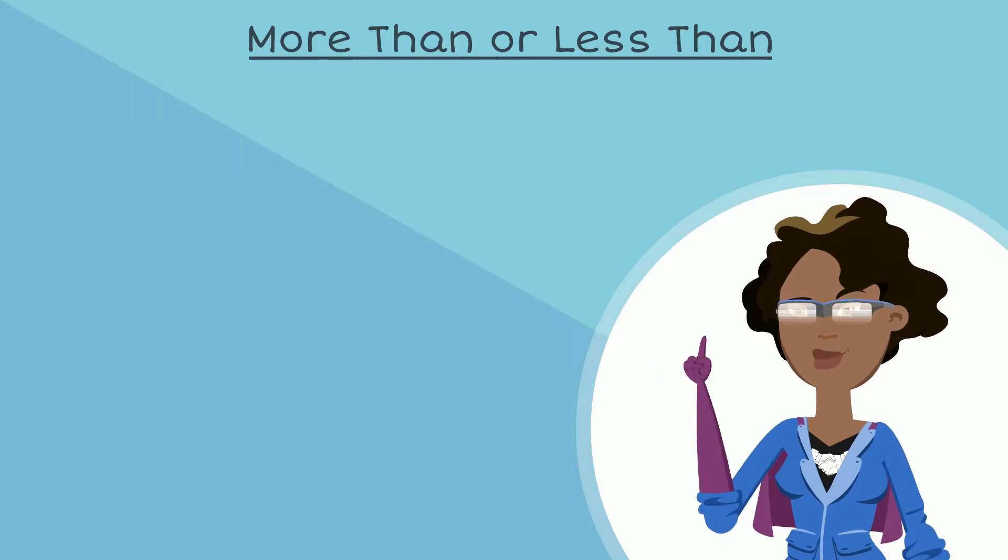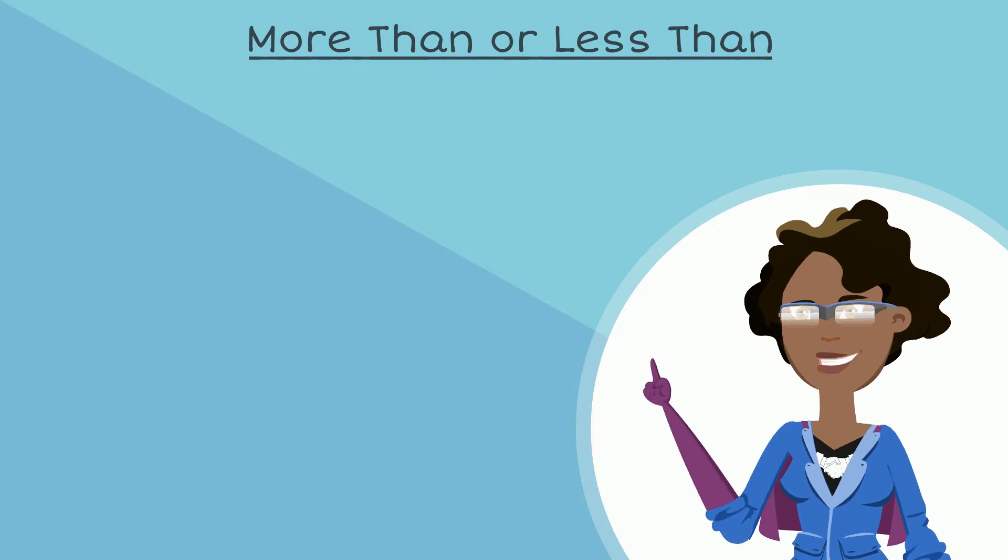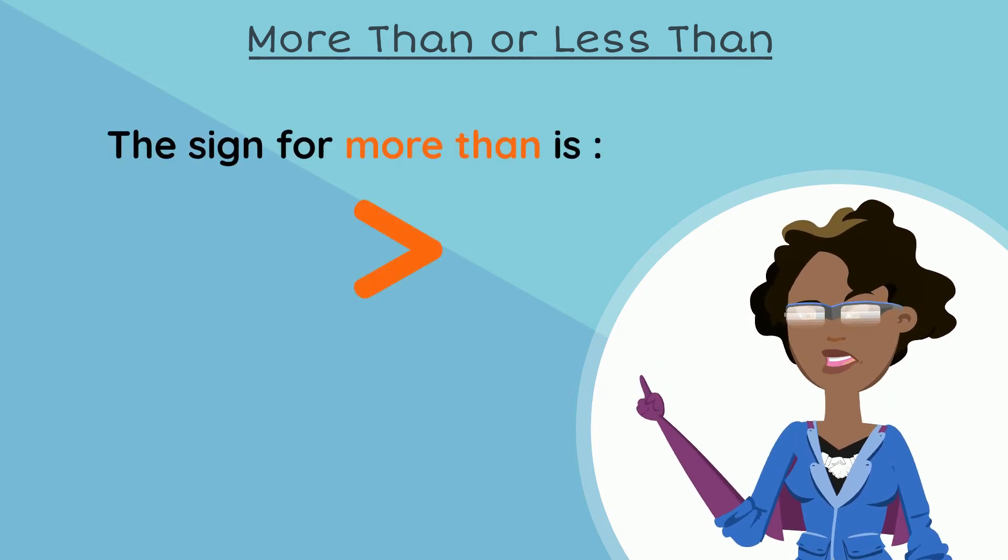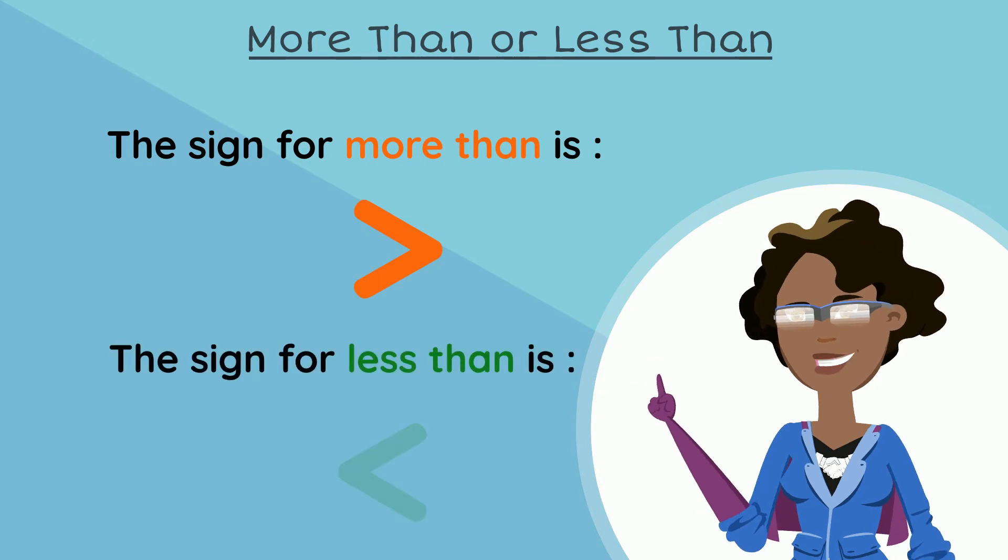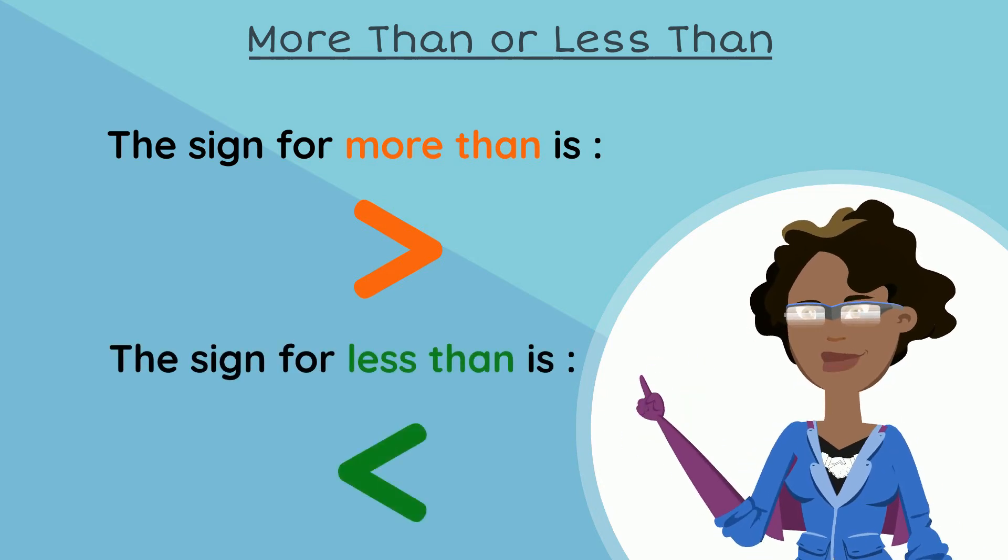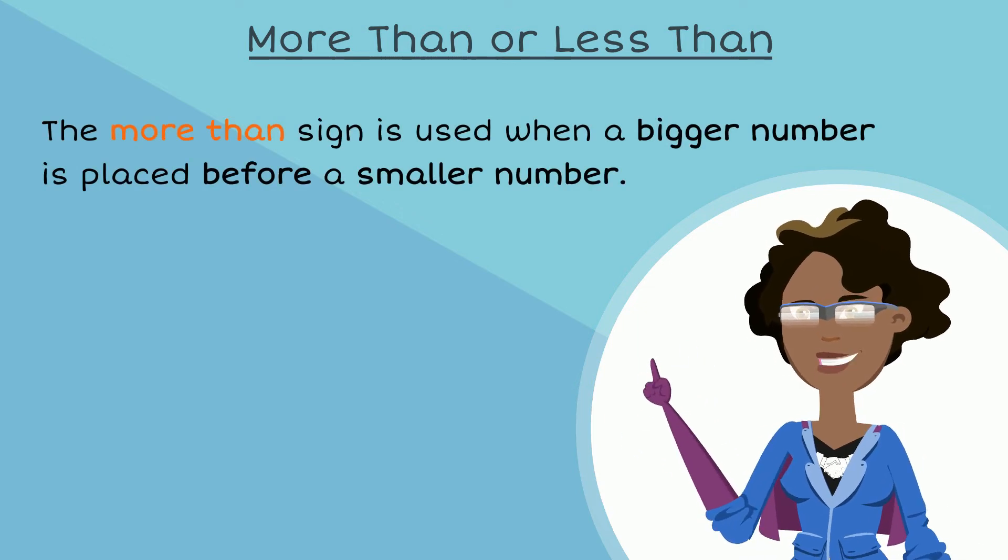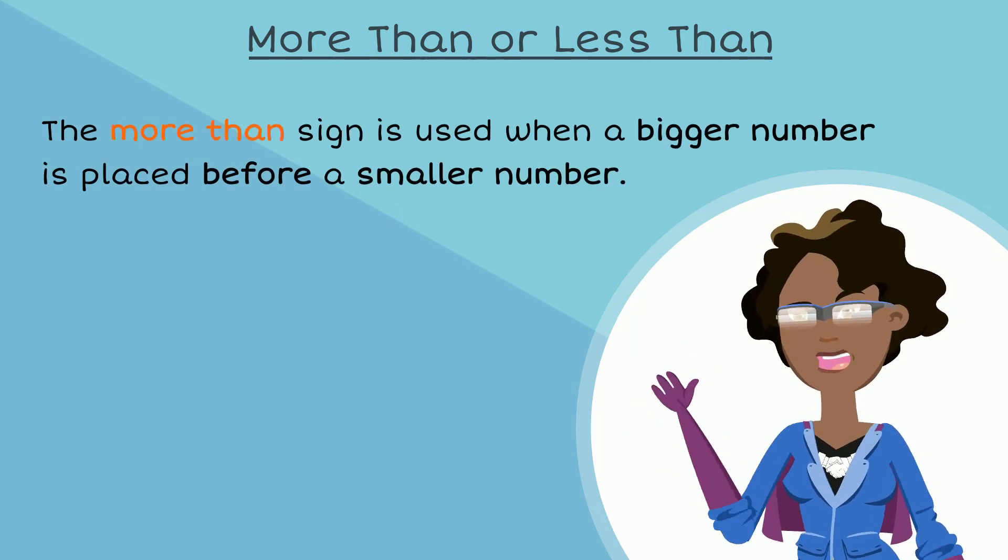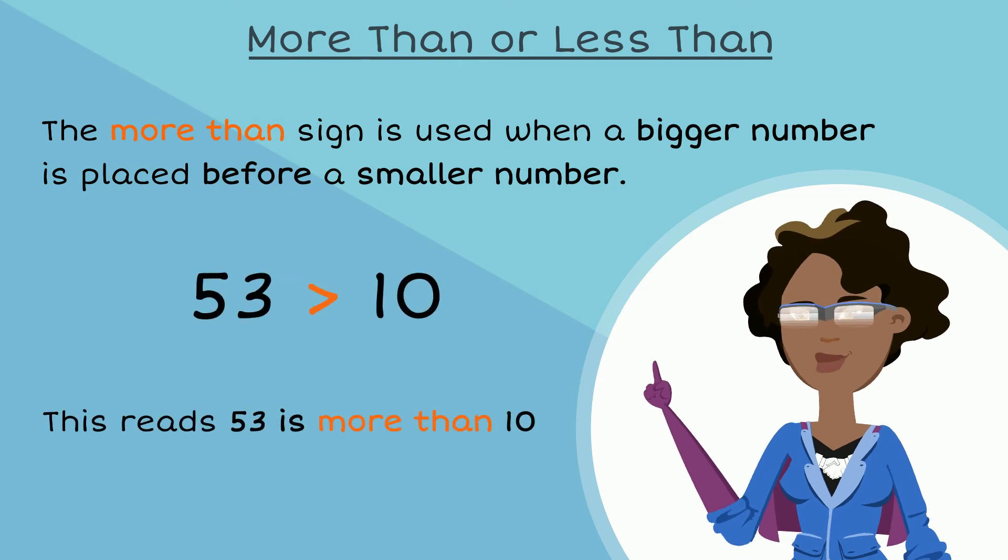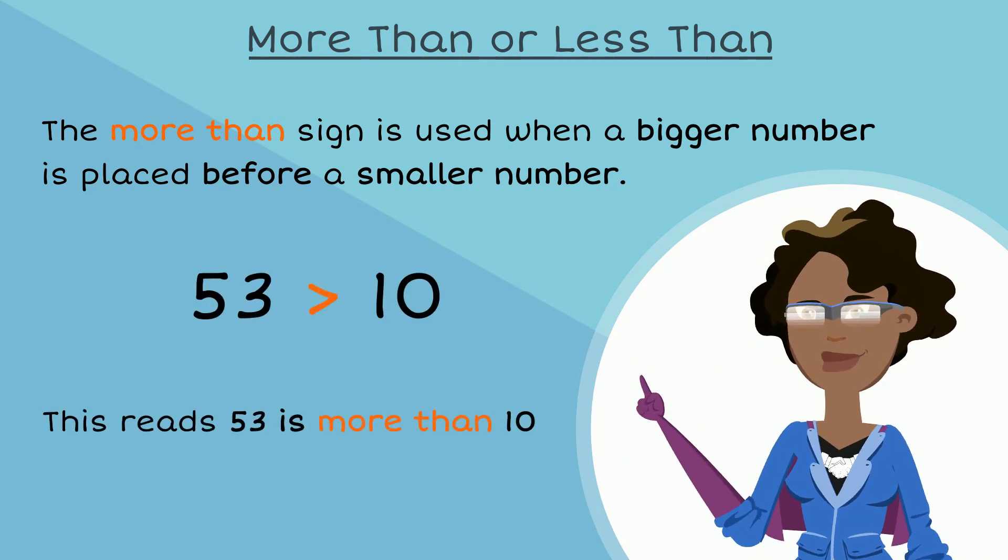Now let's move on to more than and less than. The sign for more than is this and the sign for less than is this. The more than sign is used when a bigger number is placed before a smaller number. Let's look at an example. This reads 53 is more than 10.